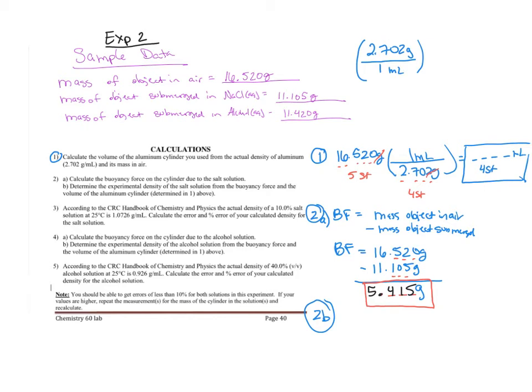And 16.520 divided by 2.702, my volume rounded to four sig figs is 6.114. So for 2b, my density - remember it's going to be the buoyancy force over the volume.